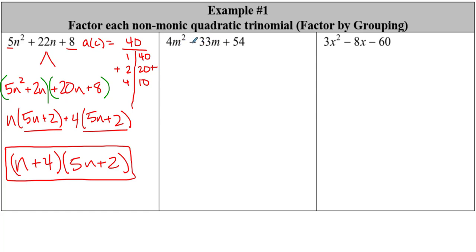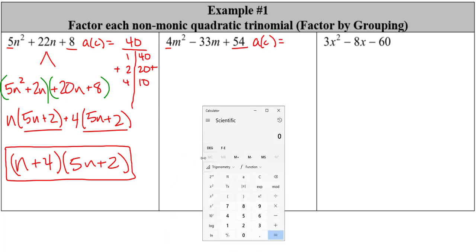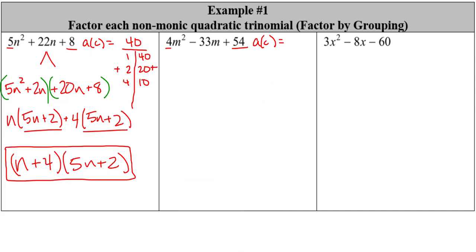Take a look at the next one. We got a negative B and a positive C. That means we are looking for two negative numbers. So let's do our A times C: we got 4 times 54, which is 216. Have a nice little calculator with you — 54 times 4 is 216.